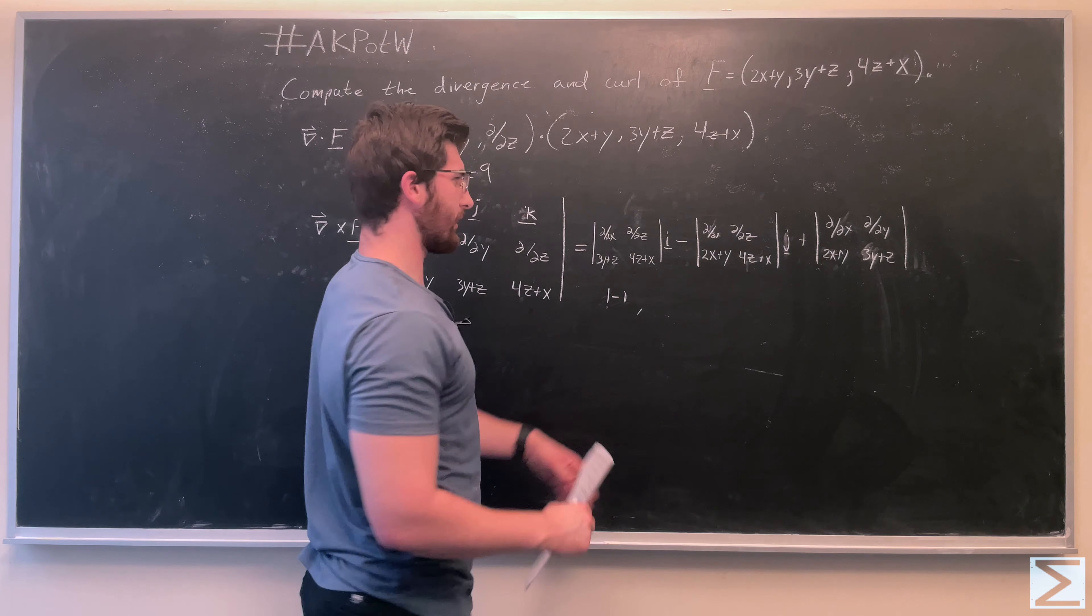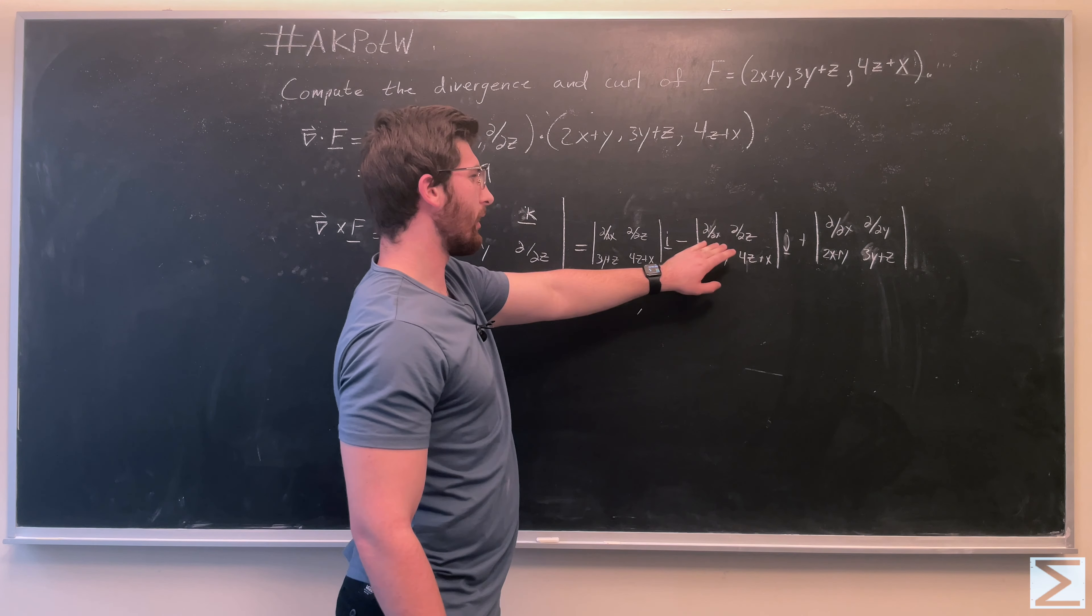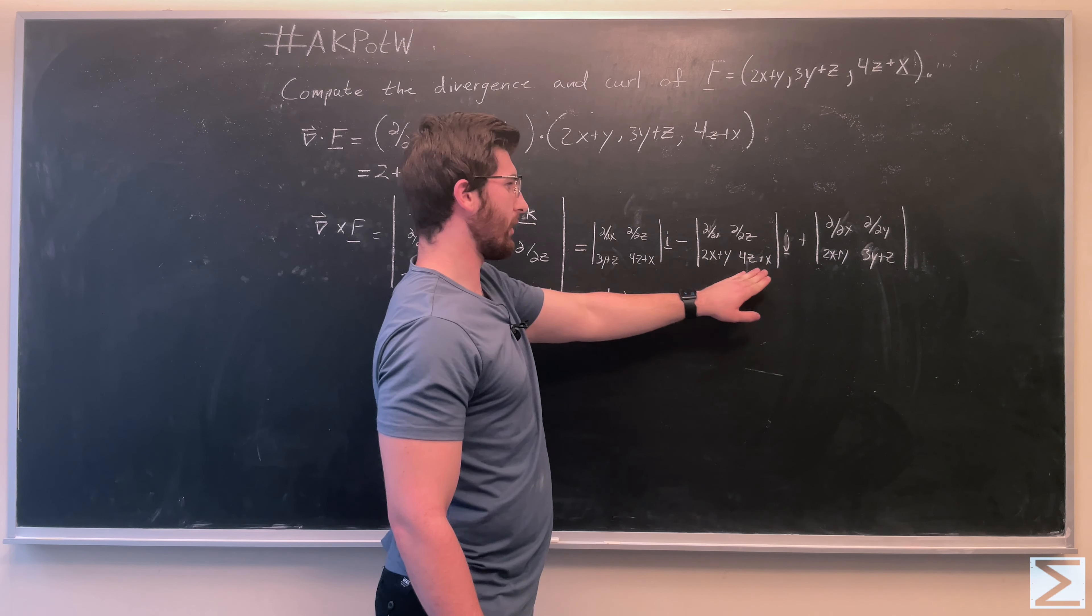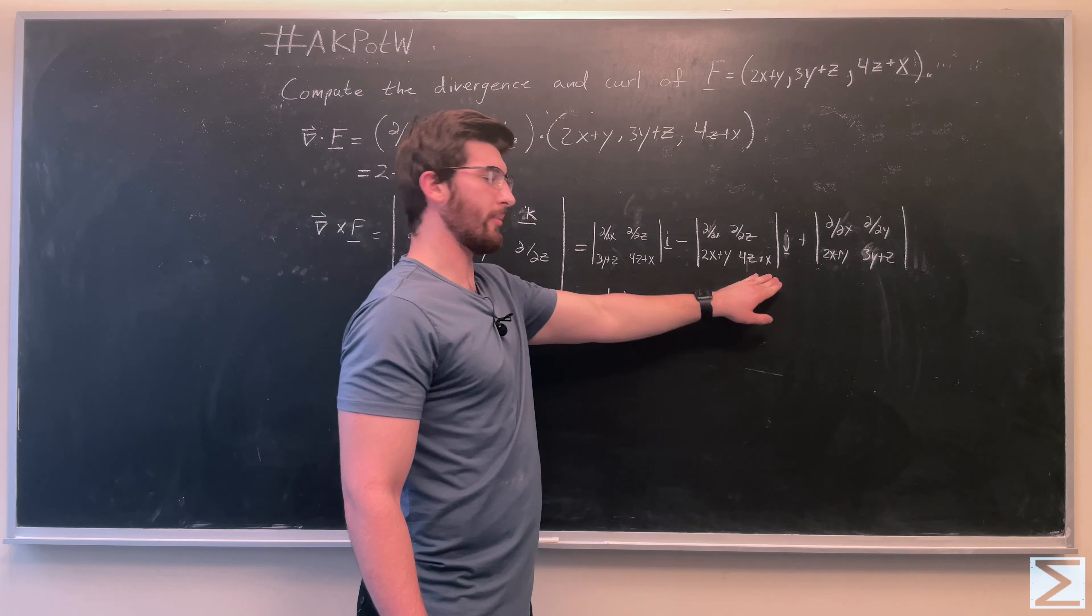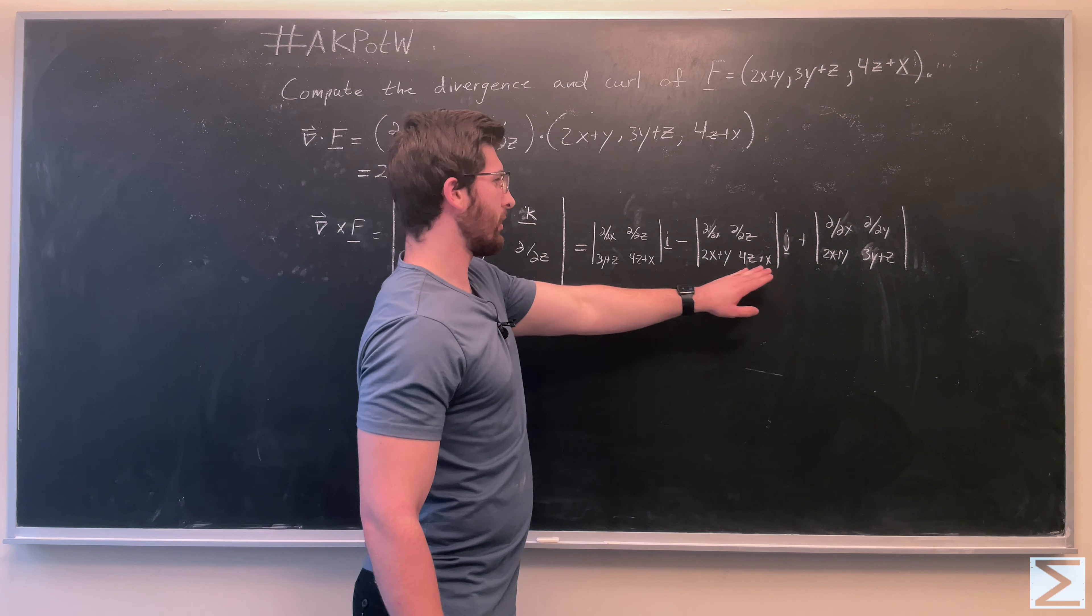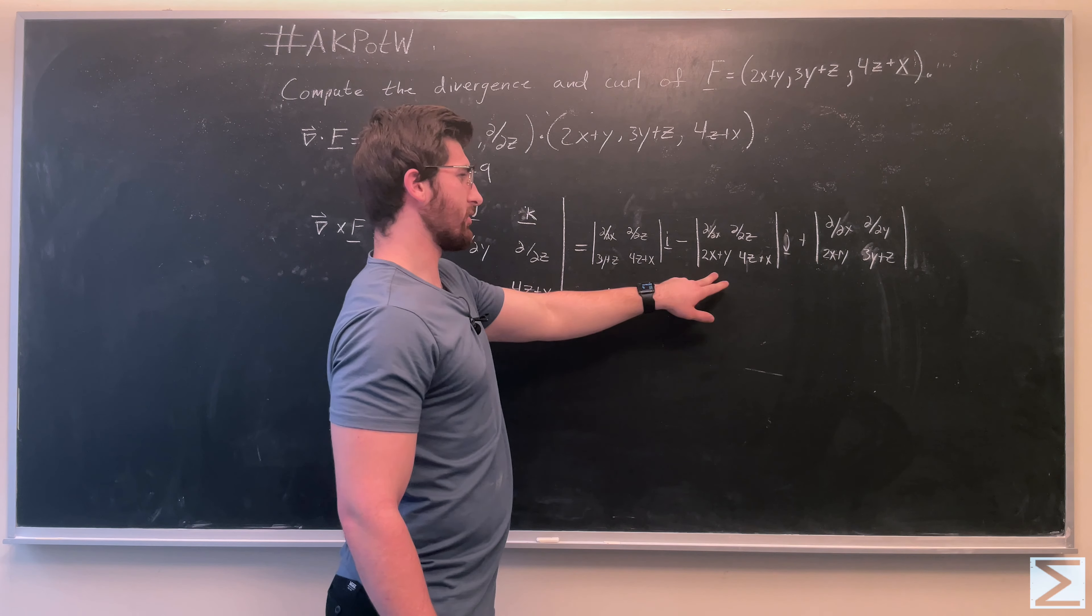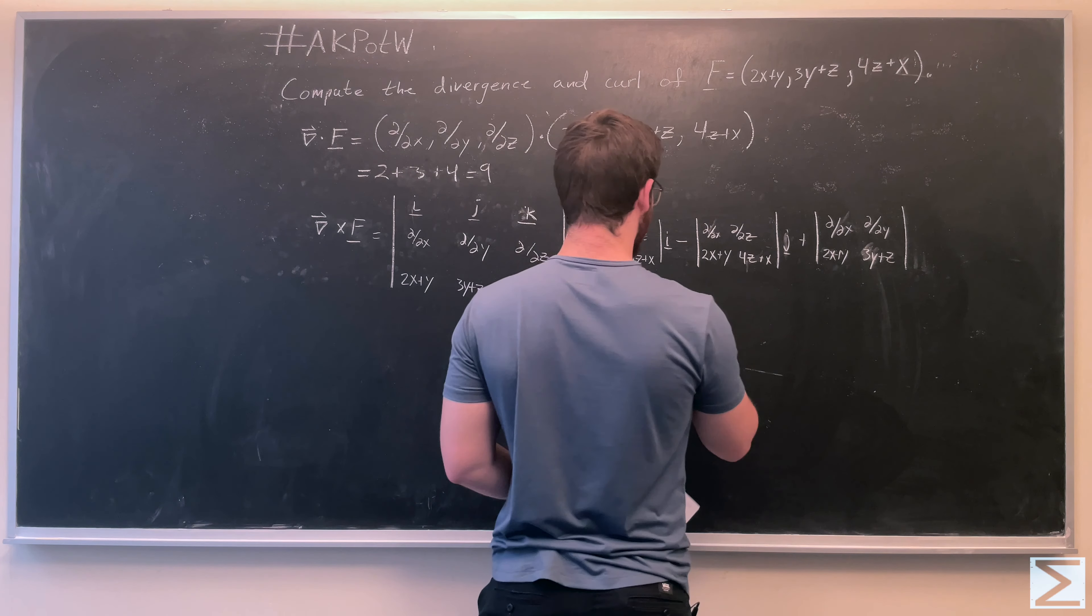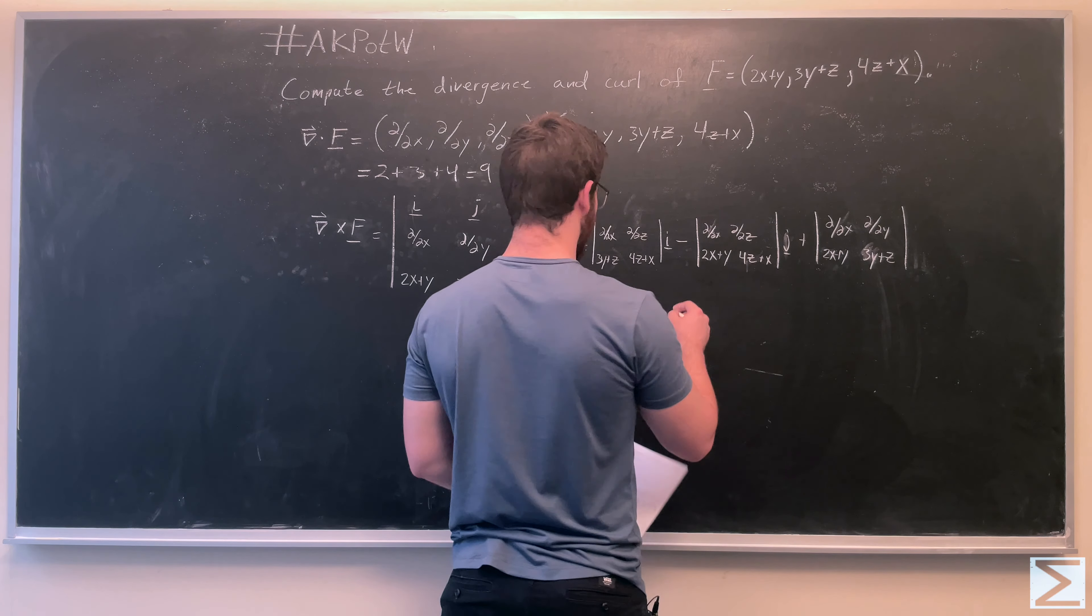And here we have the partial derivative with respect to x of 4z minus x, which is again going to be 1 here, this is going to be 0, so 0 minus 1, or sorry, 1 minus 0.